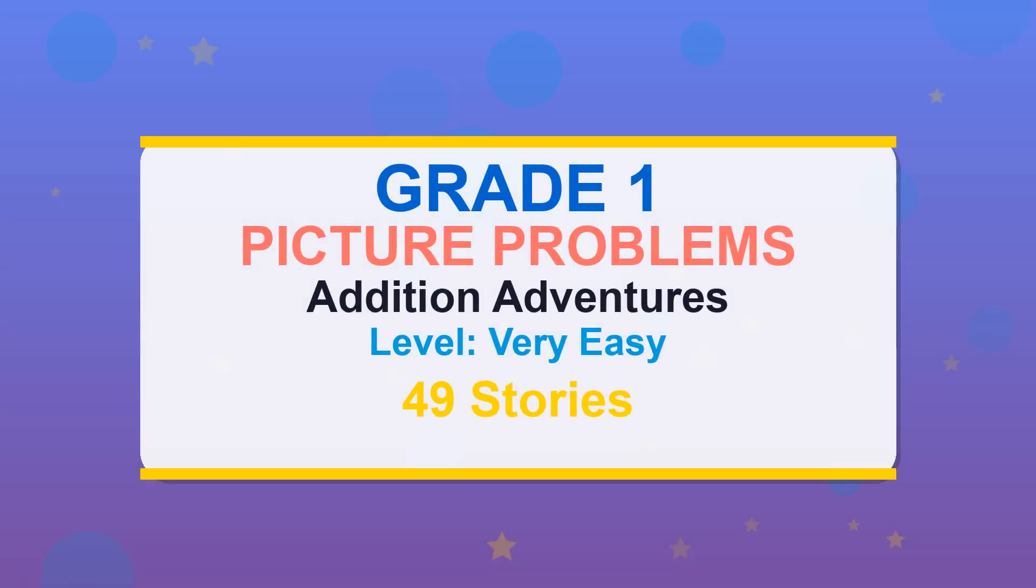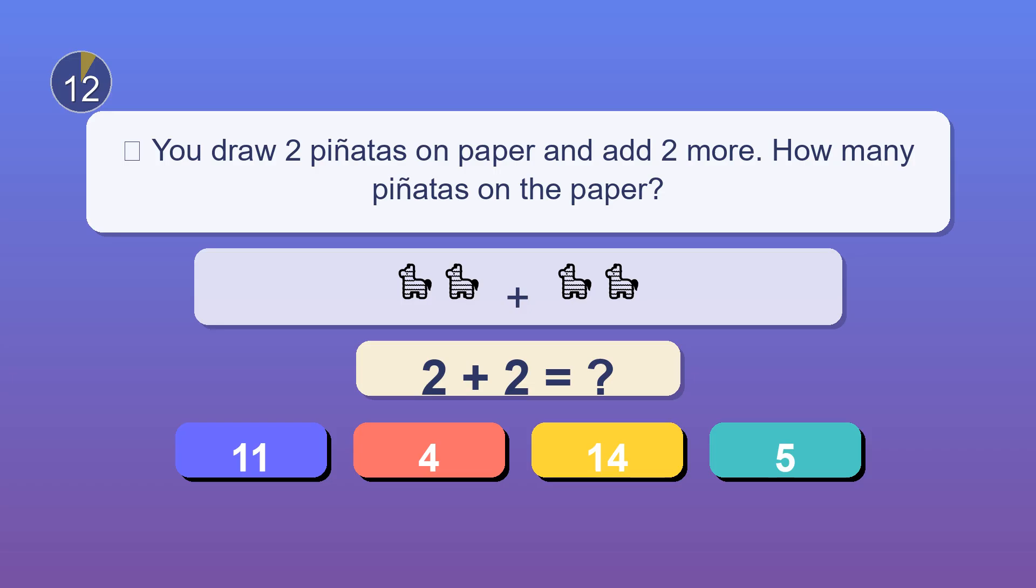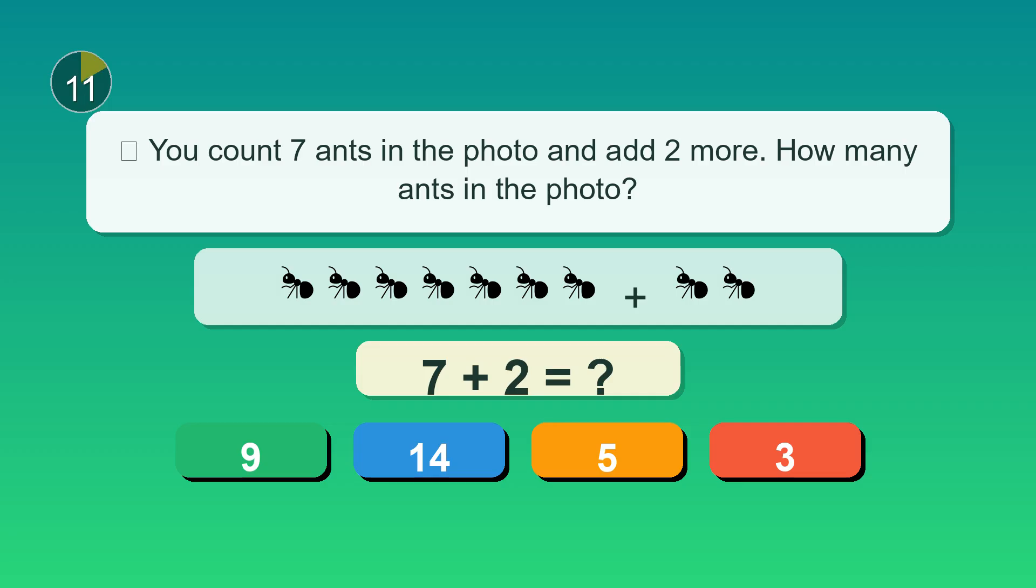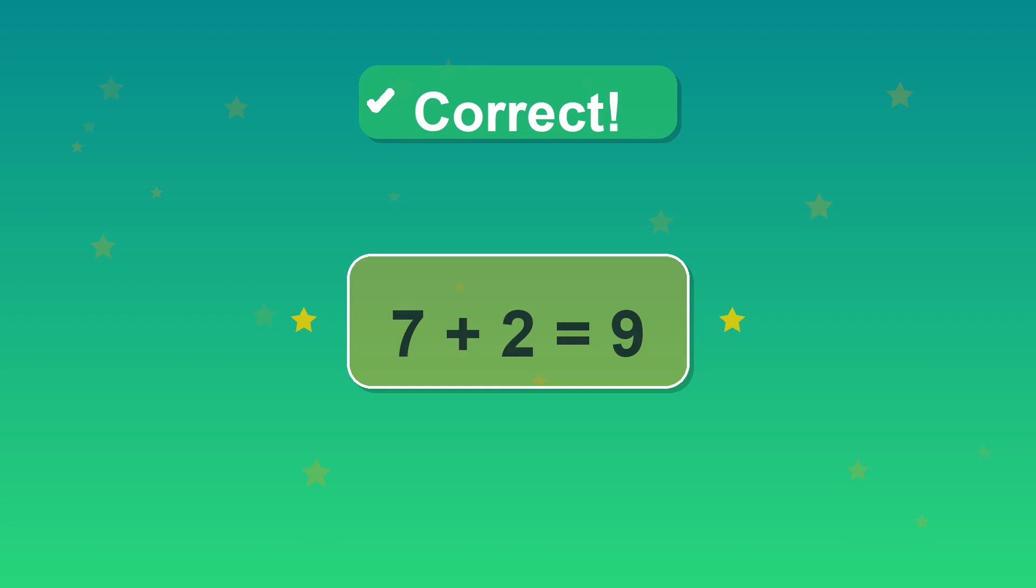Great to see you in grade 1 addition practice. Imagine you draw two piñatas on paper and add two more. How many piñatas on the paper? Correct, four. You count seven ants in the photo and add two more. How many ants in the photo? Spot on, nine.